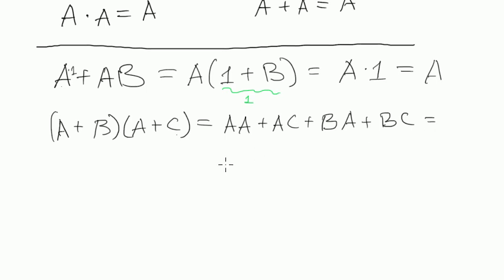So what do we have here? We have A multiplied by A. And you can see that A multiplied by A is A. So we know that this is actually just A. Let's write it down. It's already simpler. So it's A plus AC plus BA plus BC.